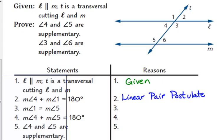The measure of angle 1 is equal to the measure of angle 5. What's the relationship between 1 and 5? What do we call those? Corresponding. What did I just give you right before we started this proof? The corresponding angles assumption.